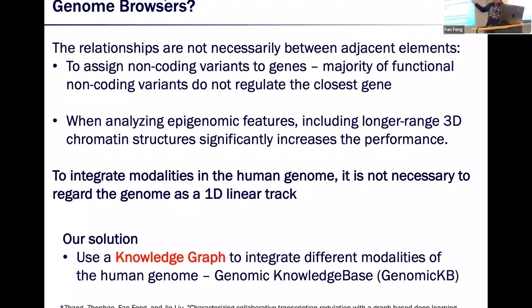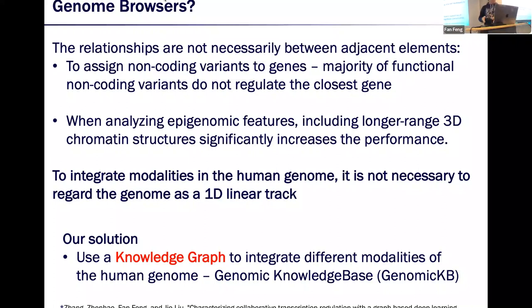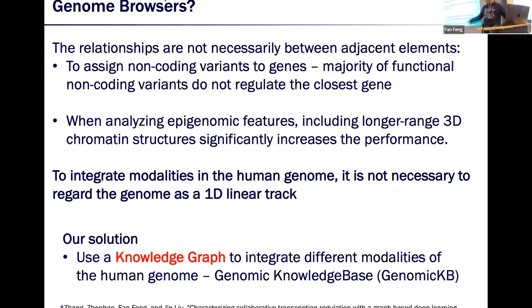From previous work in our lab, we found that when analyzing epigenomic features — for example predicting TF binding or collaborative profiles of epigenomic features — including longer-range 3D chromatin structure significantly increased performance. So our conclusion is that to integrate modalities in the human genome, it's not necessarily appropriate to regard the genome as a 1D linear track. Our solution is to use a knowledge graph to integrate different modalities of the human genome, and that tool is our Genomic Knowledge Base, also known as GenomicKB.